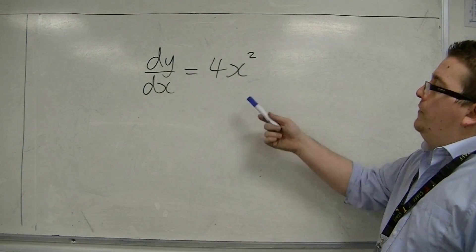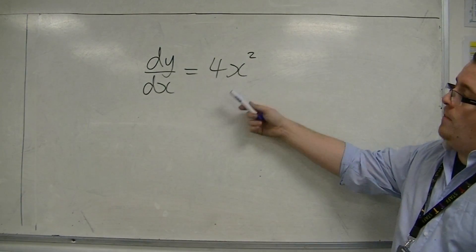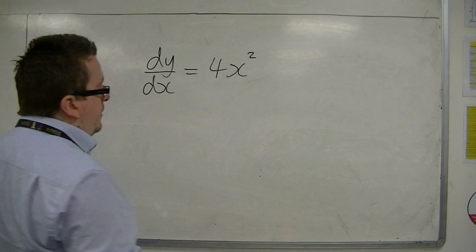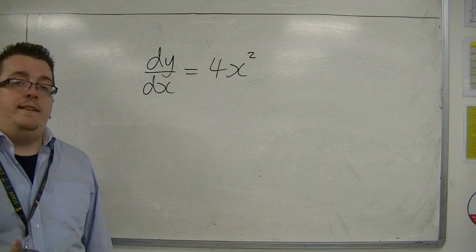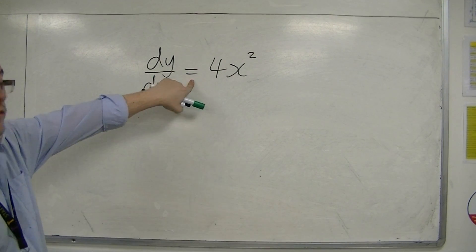You've seen equations of this form before. If you've got dy by dx equals something else, so like this 4x squared, for example, then this is a differential equation. It has a derivative in it, and it is an equation.